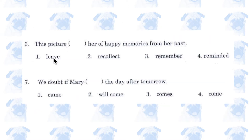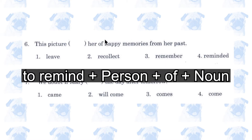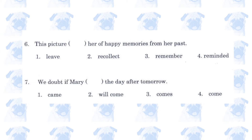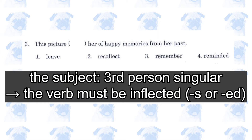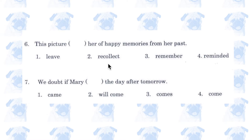Number 6. 'This picture leave / recollect / remember / reminded her of happy memories from her past.' Number 4, 'reminded'. Not only does the verb 'to remind' take the form 'remind person of noun', but the other three verbs are in the wrong form. The subject is 'this picture', a third person singular noun, which means the verb must end in either 's' or 'ed'. But 'leave', 'recollect', and 'remember' have no inflections.